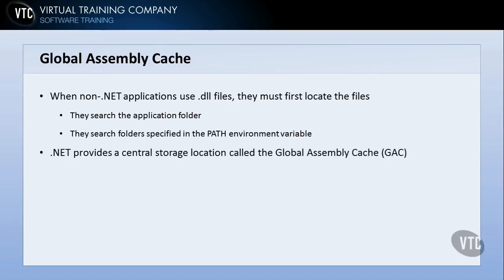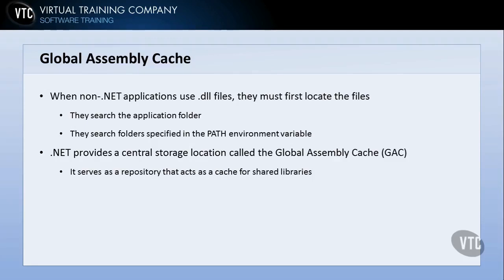.NET provides a central storage location for that purpose called the Global Assembly Cache, or the GAC. You'll hear it called all kinds of things, but that's what they're talking about. Now this thing does a lot more than just hold everything in one common location — it serves as a repository that acts as a cache for shared libraries.